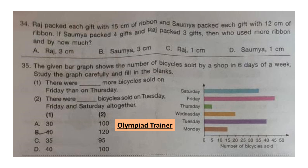Question 35. The given bar graph shows the number of bicycles sold by a shop in 6 days of a week. Study the graph carefully and fill in the blanks. Blank 1: There were how many more bicycles sold on Friday than on Thursday? On Thursday 5 bicycles were sold and on Friday 45, so the answer for blank 1 is 40.